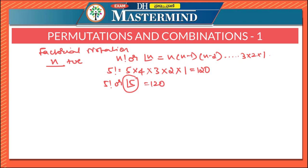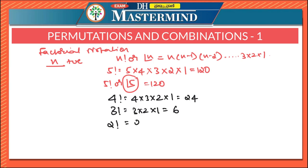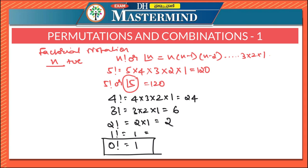Let us now see the factorials of some more numbers. 4! = 4 × 3 × 2 × 1 = 24. 3! = 3 × 2 × 1 = 6. 2! = 2 × 1 = 2. 1! = 1. But 0! is also 1 — please remember this is a very important formula while solving permutations and combinations. The value of 0! = 1.